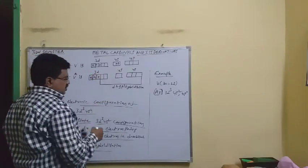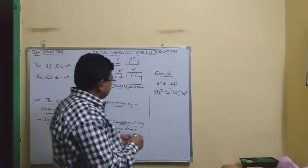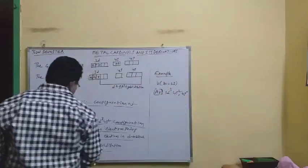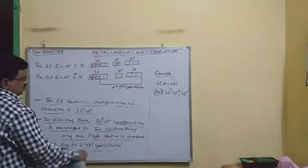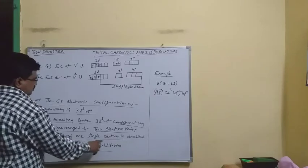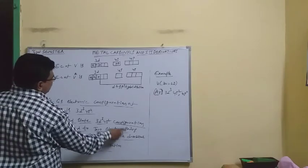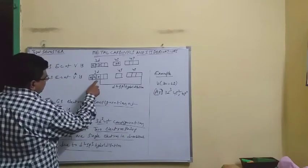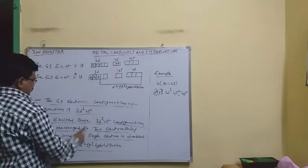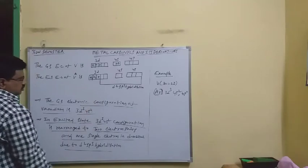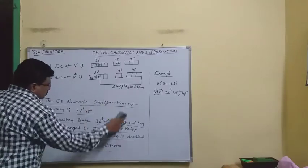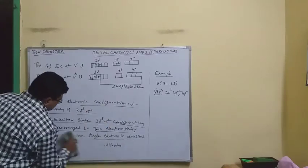There is one single electron in the d orbital. Due to D2sp3 hybridization, we have two electron pairs and one single electron in the d orbital.